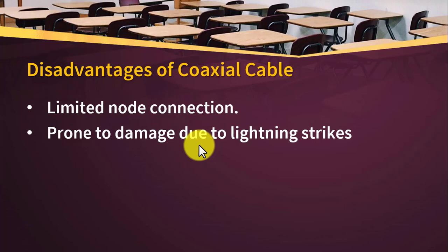There are a few disadvantages of coaxial cable. Limited node connections — you cannot add as many nodes as you want, and if you add more nodes, the speed will drop. It is also prone to damage due to lightning strikes; coaxial cables are badly affected by lightning. These are the two major disadvantages of coaxial cable.